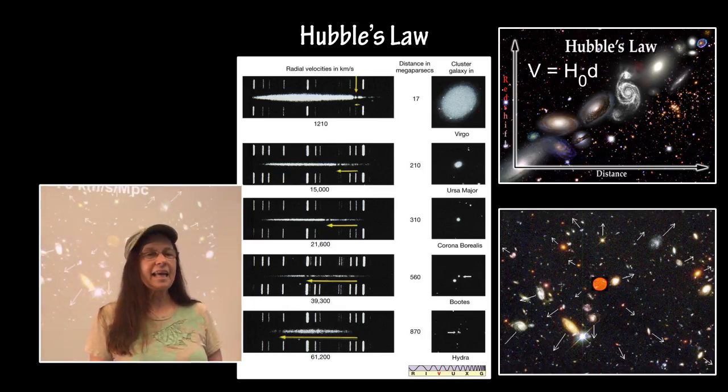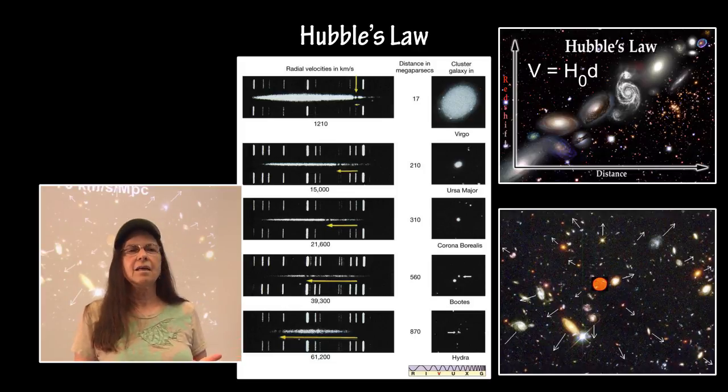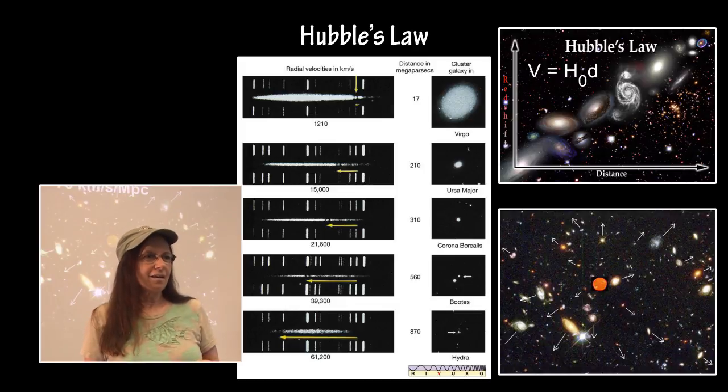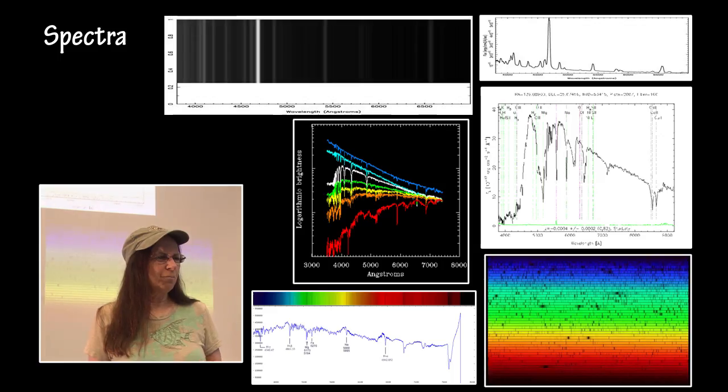Hubble's Law. There is a relationship between the distance of a faraway galaxy and its recessional velocity using Hubble's constant, which I think is still around 70 kilometers per second per megaparsec. It's changed a lot over the years, anywhere from 40 to 90. I think it's around 70 right now.